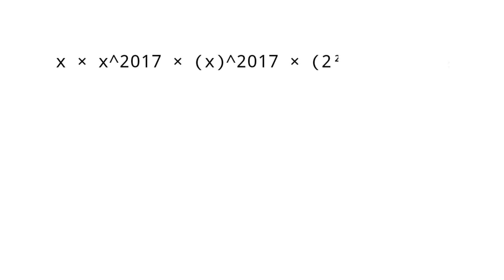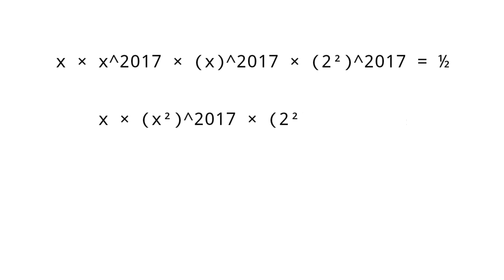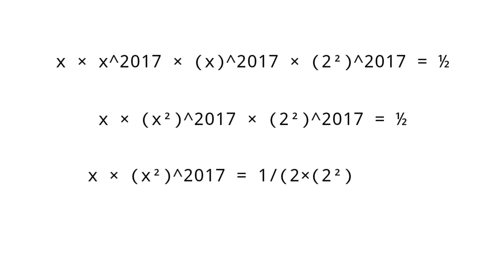Since 4 equals 2 squared, we get x raised to 2018 into x raised to 2017 into 2 squared raised to 2017 equals 1 by 2. Simplifying, x into (x squared) raised to 2017 equals 1 by 2 into 2 squared raised to 2017, so x equals 1 by 2.